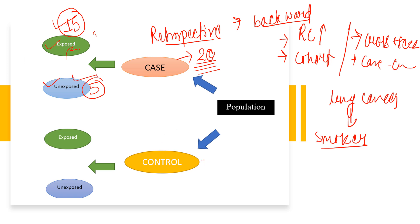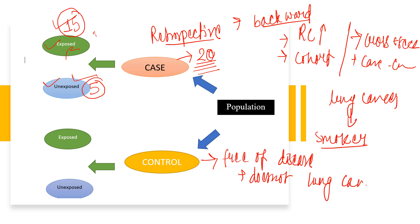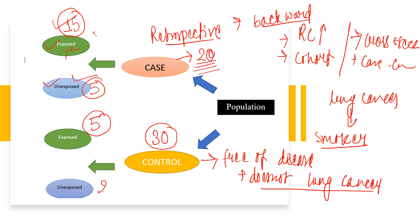Now, what about the control? The controls are free of disease — they do not have lung cancer. Suppose we take 30 controls. We then find how many of them smoke and how many don't. For example, 5 don't smoke and the remaining 25 do smoke. We categorize the cases and controls into exposed and non-exposed groups.